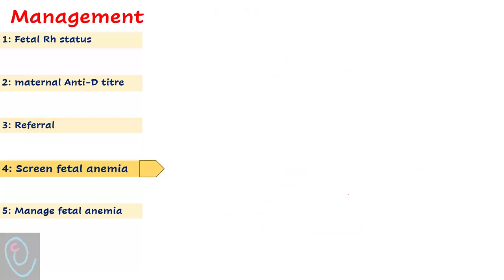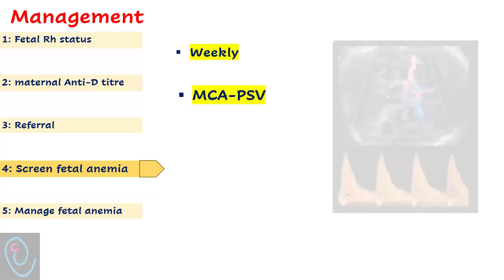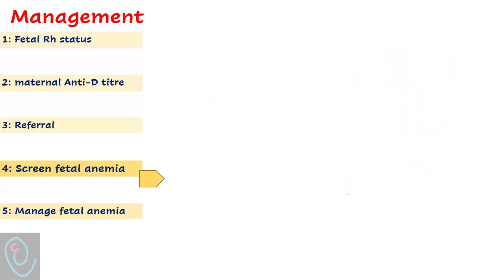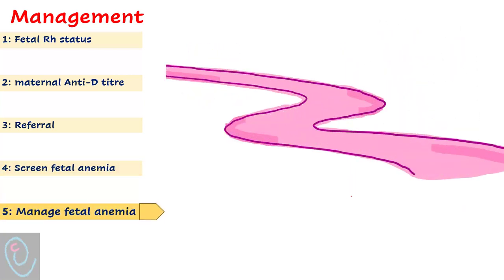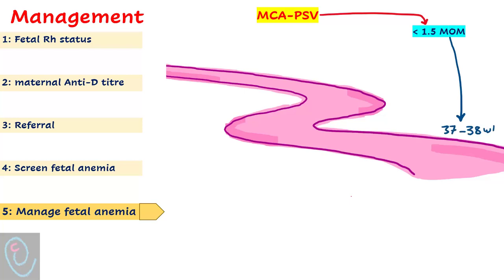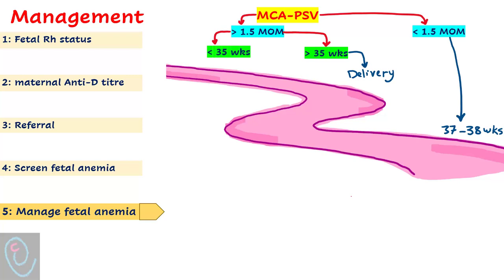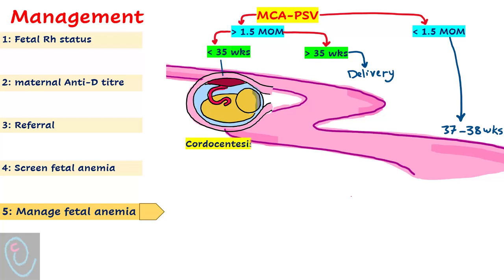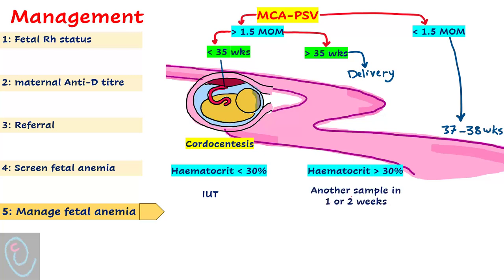The next step is screening for fetal anemia by measurement of middle cerebral artery peak systolic velocity (MCA-PSV) every week. If MCA-PSV is less than 1.5 multiples of median, schedule delivery at 37 to 38 weeks. If MCA-PSV is more than 1.5 multiples of median and gestational age is more than 35 weeks, consider delivery. If gestational age is less than 35 weeks, perform cordocentesis to diagnose fetal anemia. If hematocrit is less than 30%, intrauterine transfusion is recommended. If hematocrit is more than 30%, repeat testing in one to two weeks.